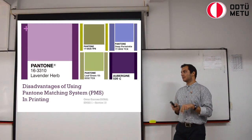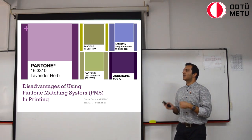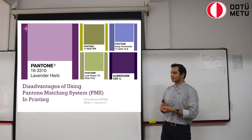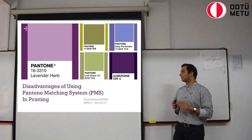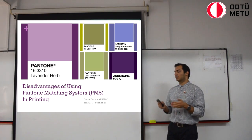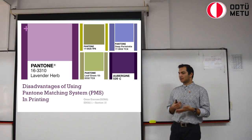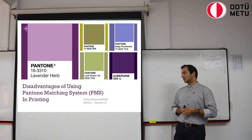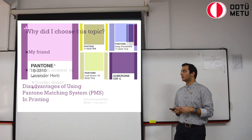Pantone is a company that specializes in color and is basically responsible for color names such as lavender herb, leaf green, deep periwinkle, or aubergine. And today I'll be giving a presentation about disadvantages of using the Pantone matching system in printing.